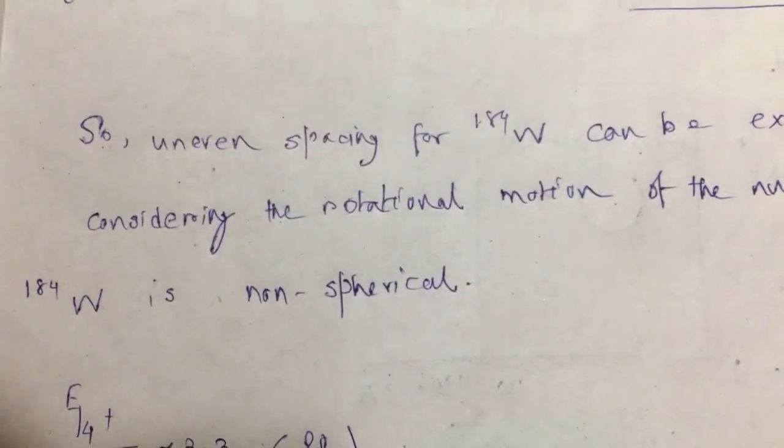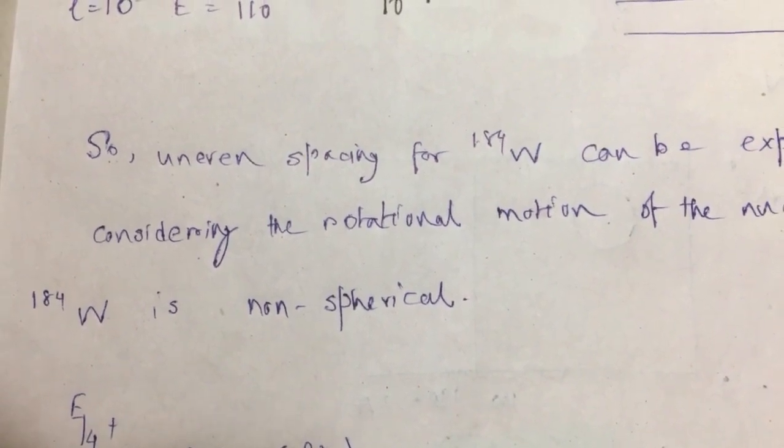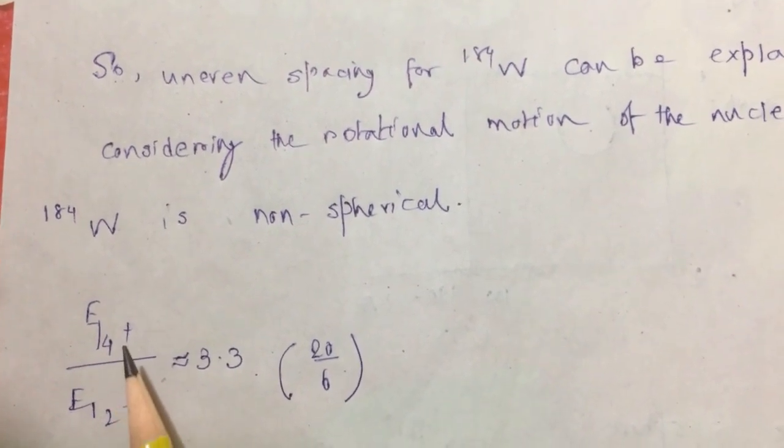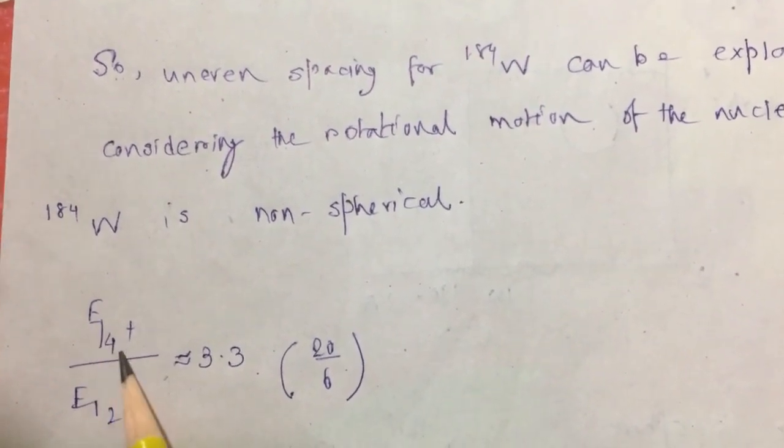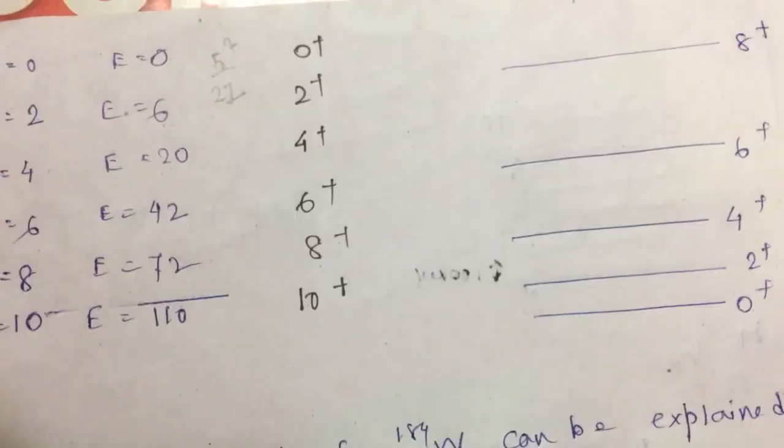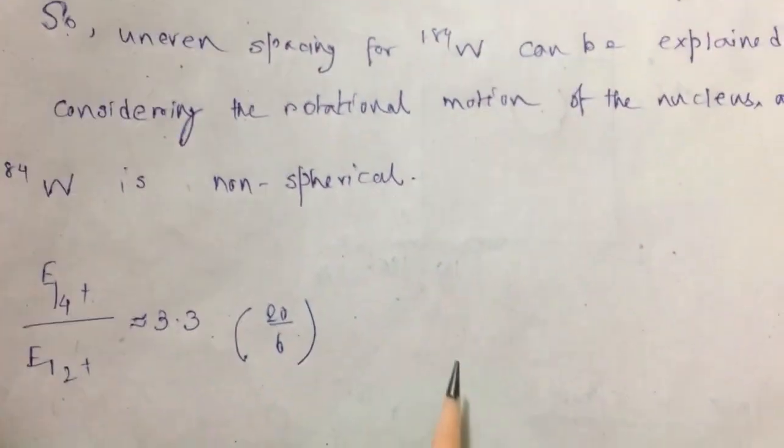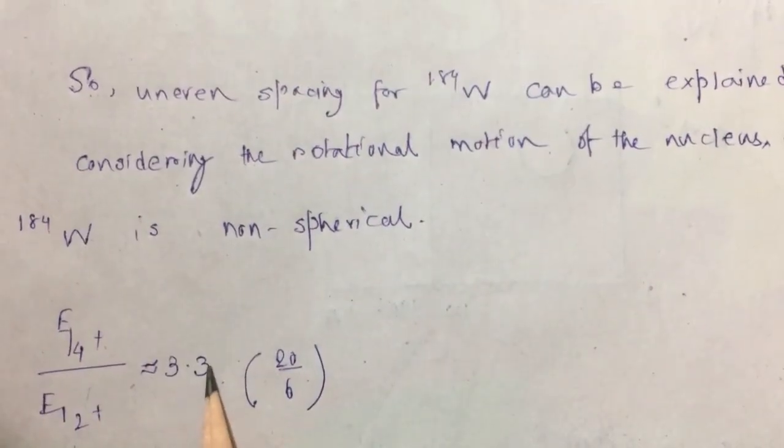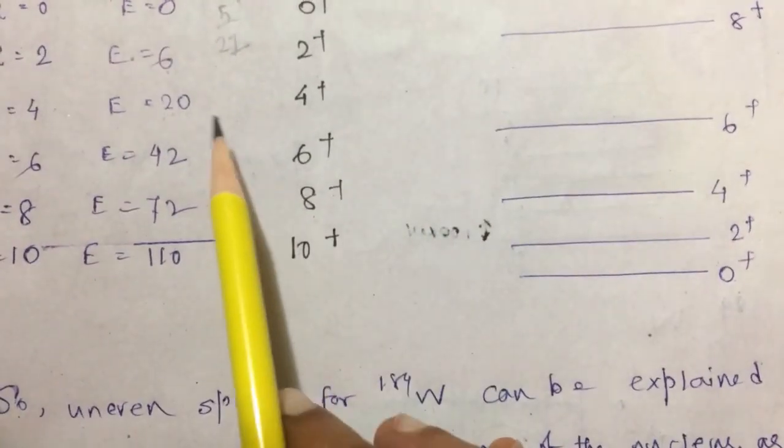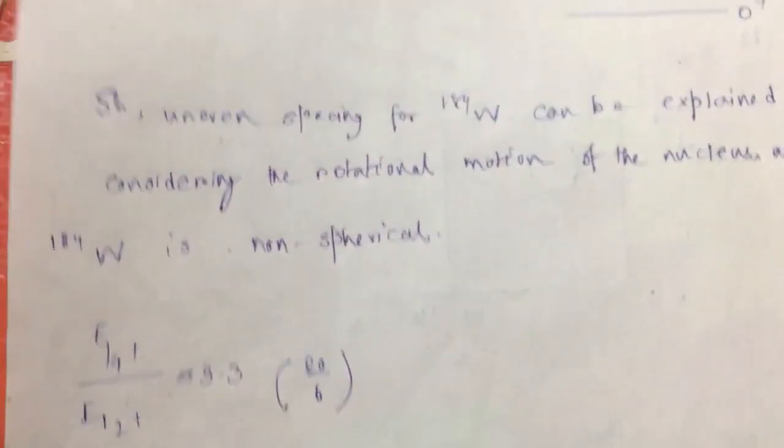And rotational motion of any nucleus is relevant only when the nucleus itself is a non-spherical substance. And if we can find out the ratio between this E(4+) state and the next lower level, which is 4+ and 2+, this will be 3.3. That means here we have to divide 20 divided by 6, so this will give me 3.3.